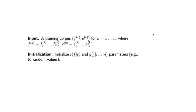Okay, so now let's describe the EM algorithm. The input to the algorithm is a training corpus consisting of sentence pairs. FK is the K-th French sentence. EK is the K-th English sentence. And in the initialization step, we're going to initialize our T and Q parameters to some initial value.